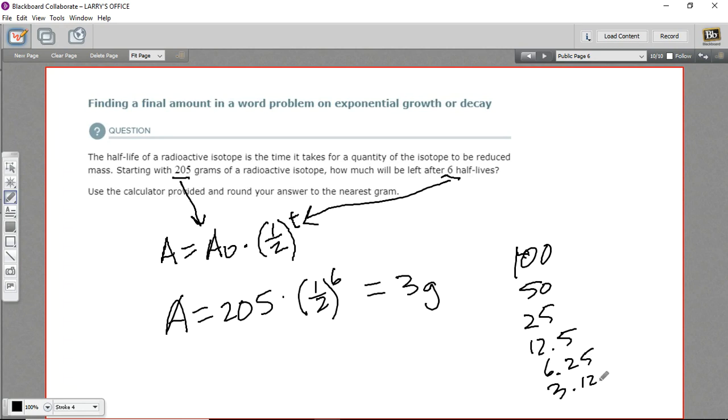So something like that. And as you can see, that's basically what we came up with. Six half-lives ended up with three grams. So that is how to calculate a problem that has to do with exponential decay.